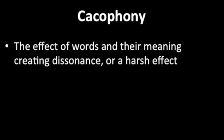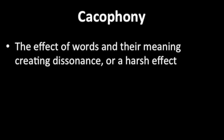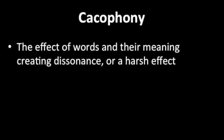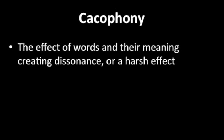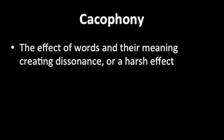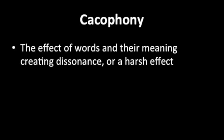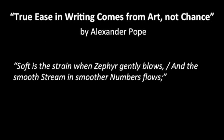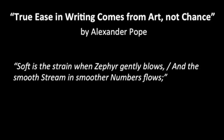Cacophony is the opposite of euphony. It is the effect of words and their meaning creating dissonance, or a harsh effect. Examples of euphony and cacophony are found in the poem 'True Ease in Writing Comes from Art, Not Chance' by Alexander Pope.